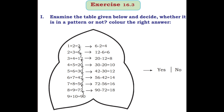Let's go to Exercise 16.3. First main: examine the table given below and decide whether it is in a pattern or not. The table shows: 1×2=2, 2×3=6, 3×4=12, 4×5=20, 5×6=30, 6×7=42, 7×8=56, 8×9=72, 9×10=90. The differences between products increase by 2 each time (4, 6, 8, 10...), so yes, it is in a pattern. Mark the answer as 'yes'.